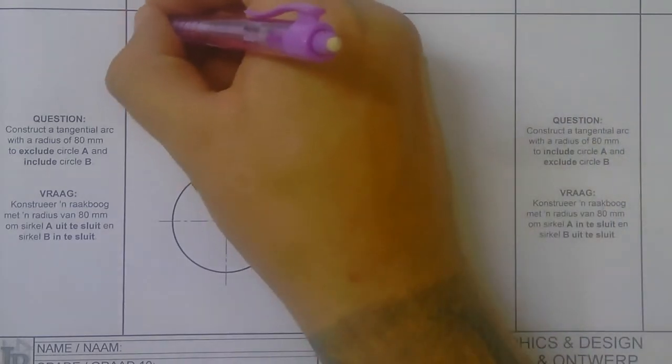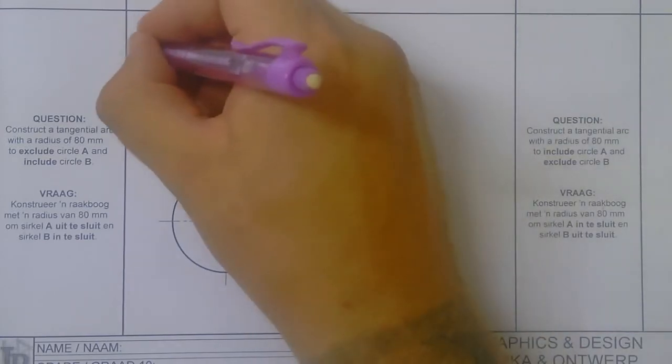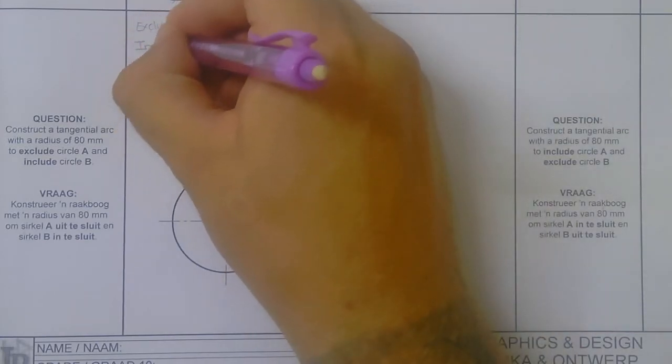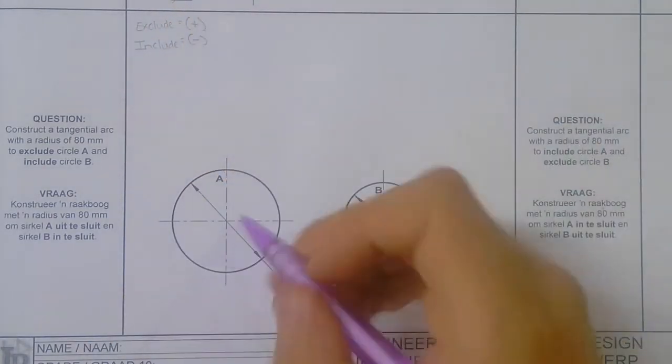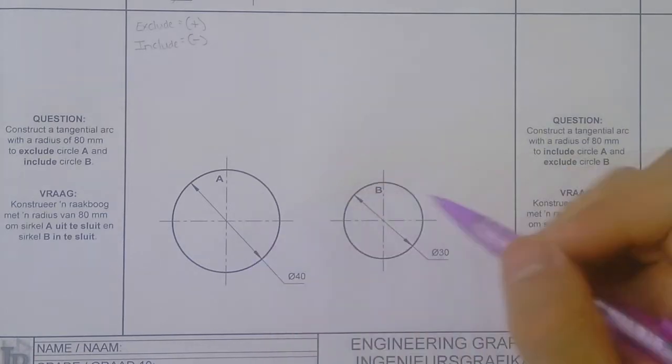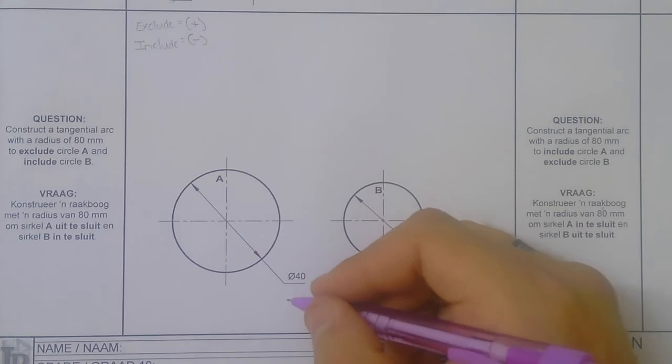So remember, exclude equals plus and include equals minus. So with one circle we're adding and the other one we're subtracting. Now remember we use radiuses.